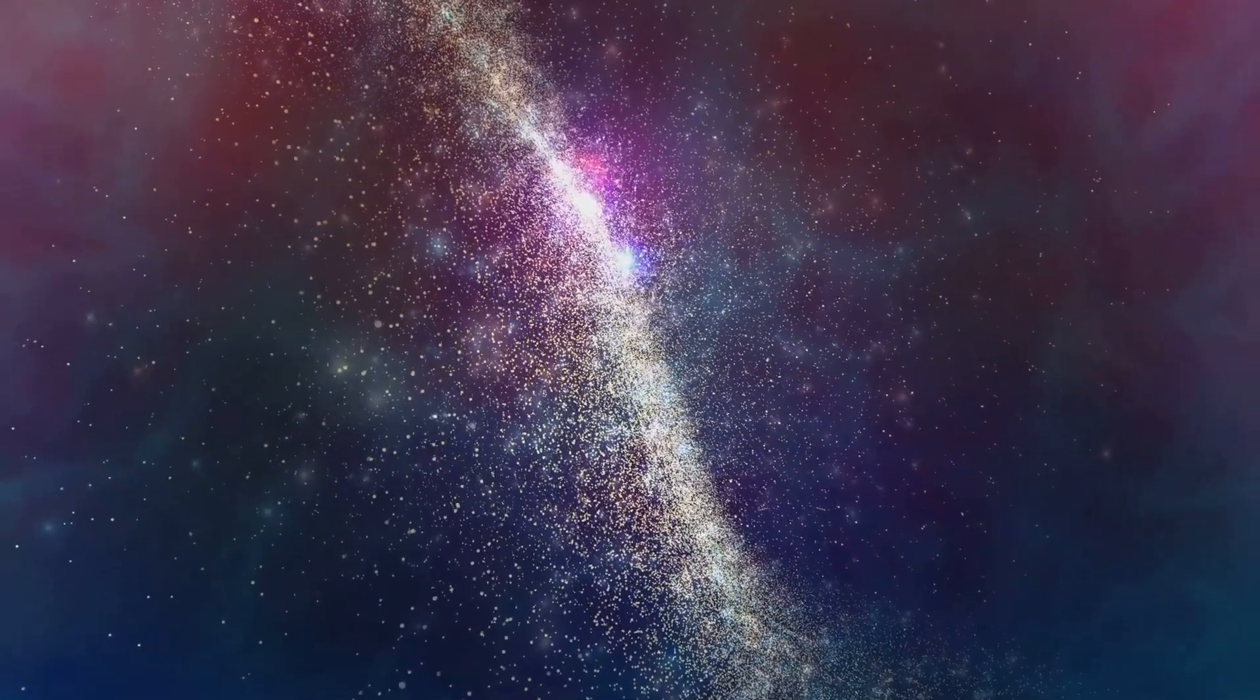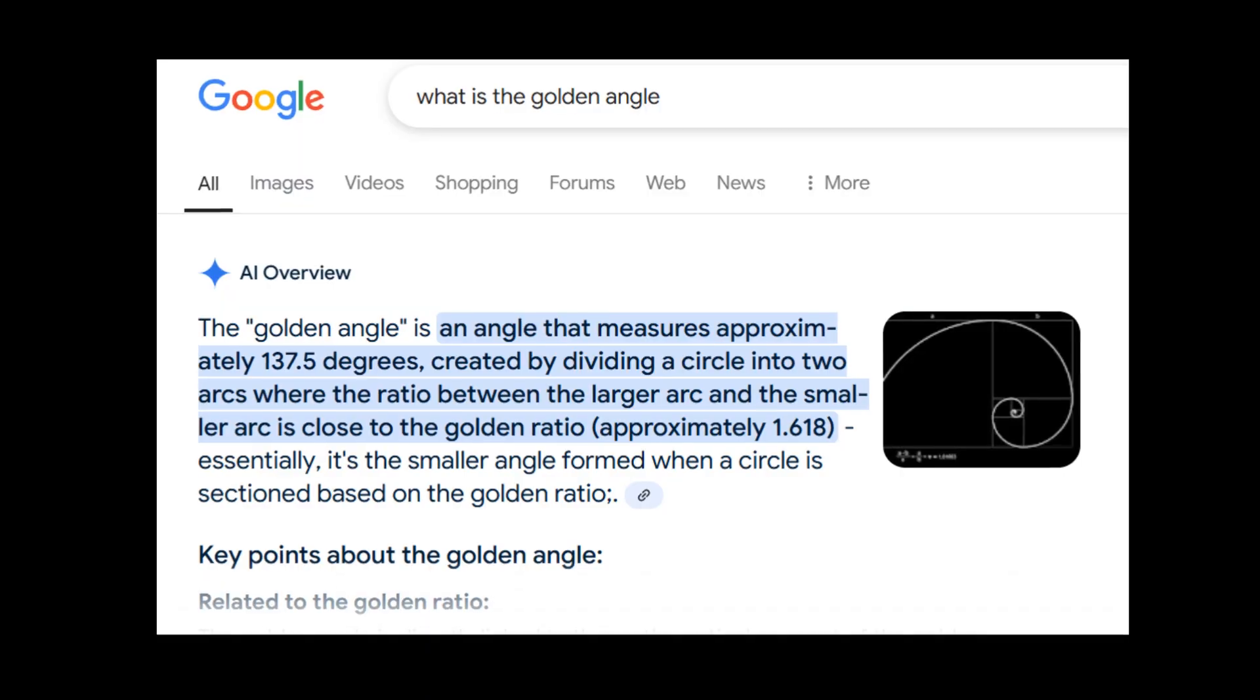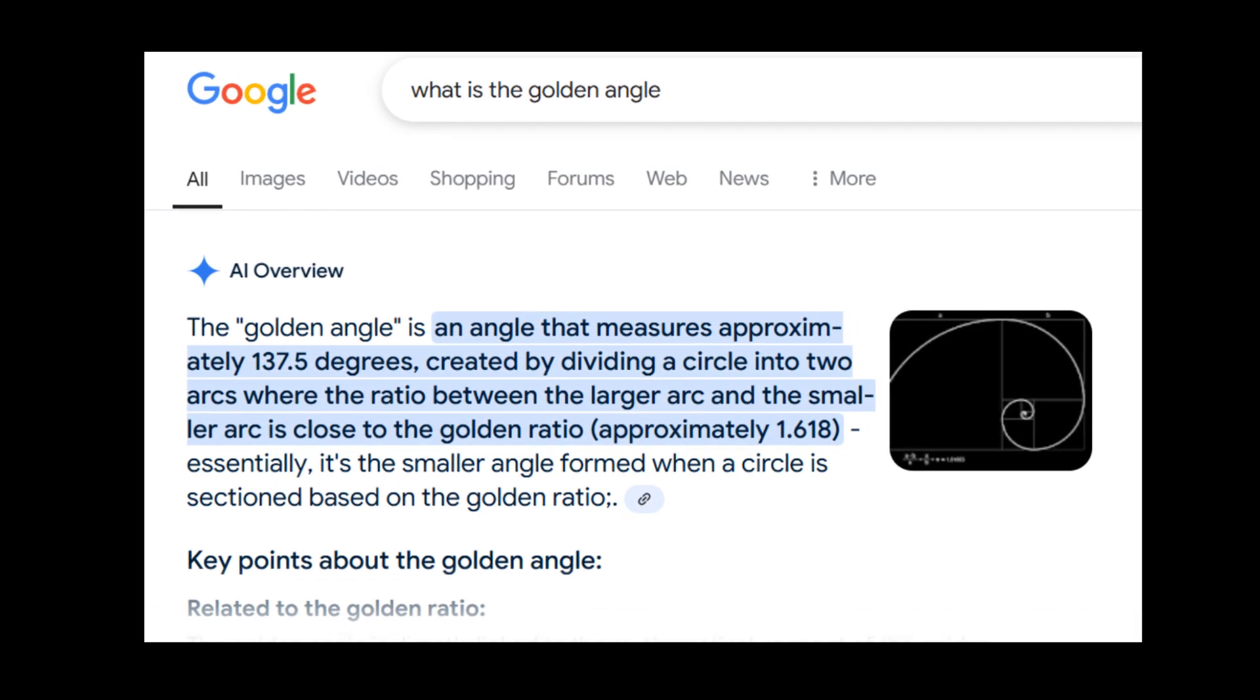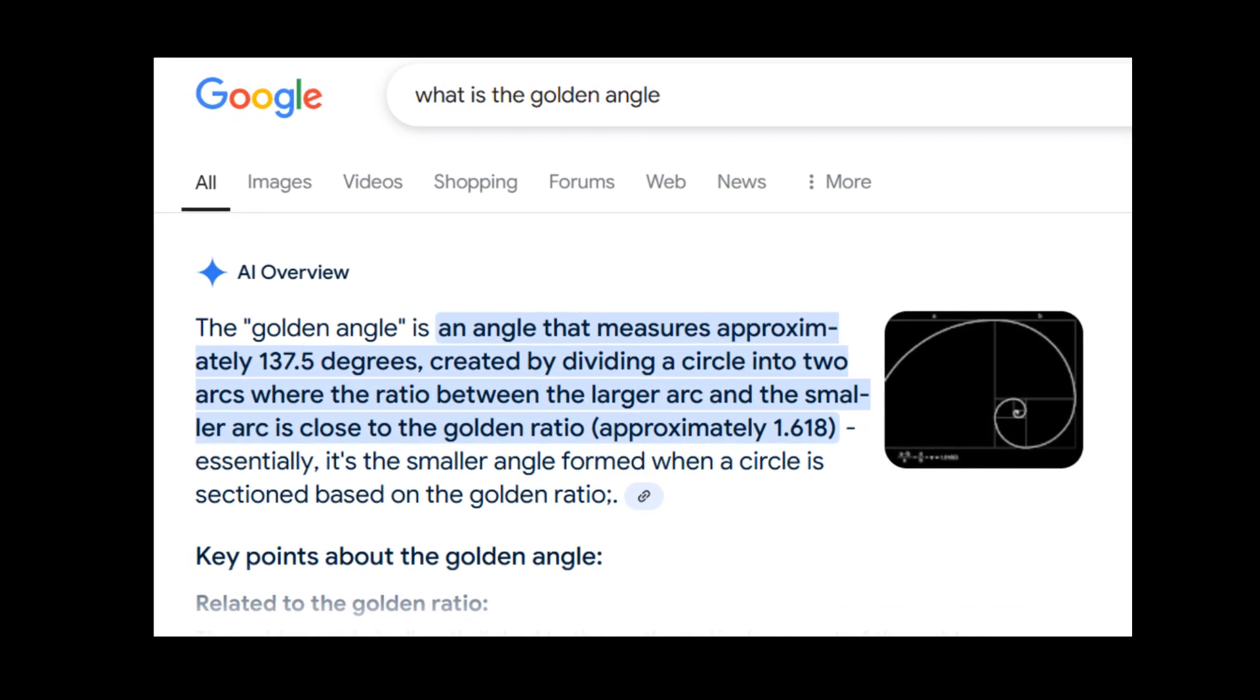There is, of course, much more hidden in this universal clock, which we can get into later. One thing you should note is that 137.5 is also the Fibonacci golden angle.